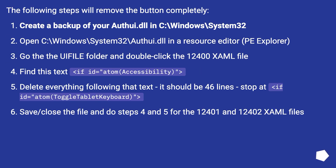The following steps will remove the button completely. Create a backup of your authui.dll in C:\Windows\System32. Open C:\Windows\System32\authui.dll in a resource editor like PE Explorer. Go to the file folder and double-click the 12400 XAML file. Find this text: if i.d.equals atom accessibility.